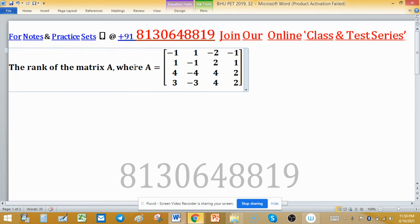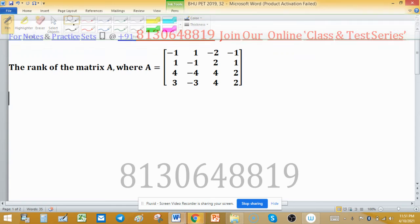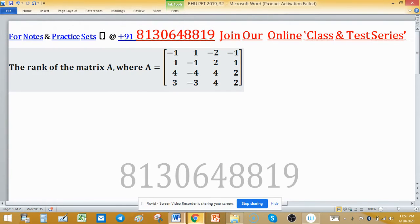The rank of the matrix A, where A is this matrix. Now find rank of this matrix. So how to find rank? First we know that rank is the greatest minor which has a nonzero determinant, or in terms of nonzero rows or column vectors, this is known as rank.